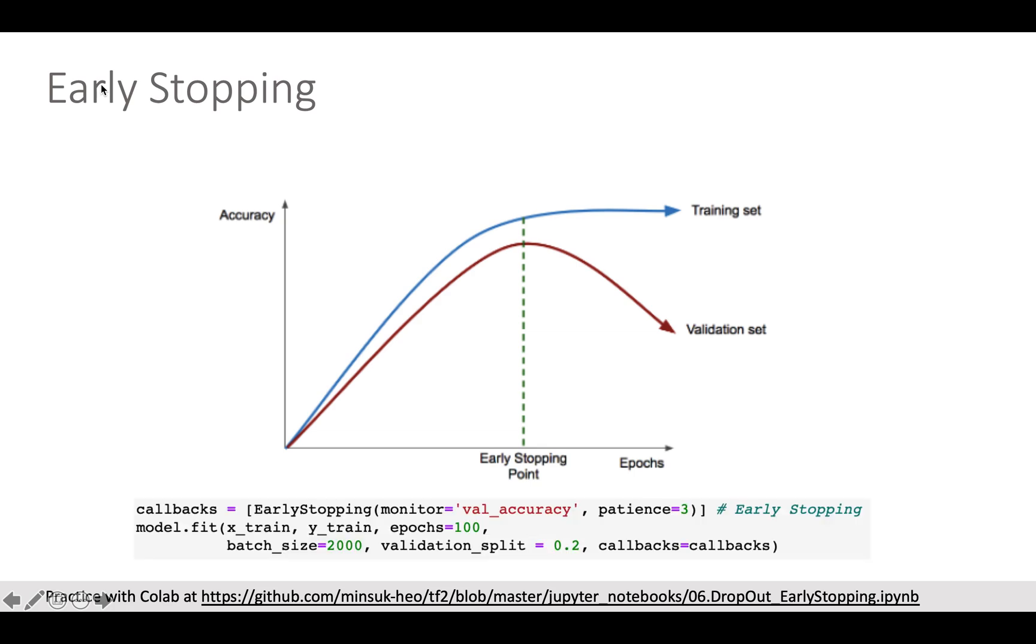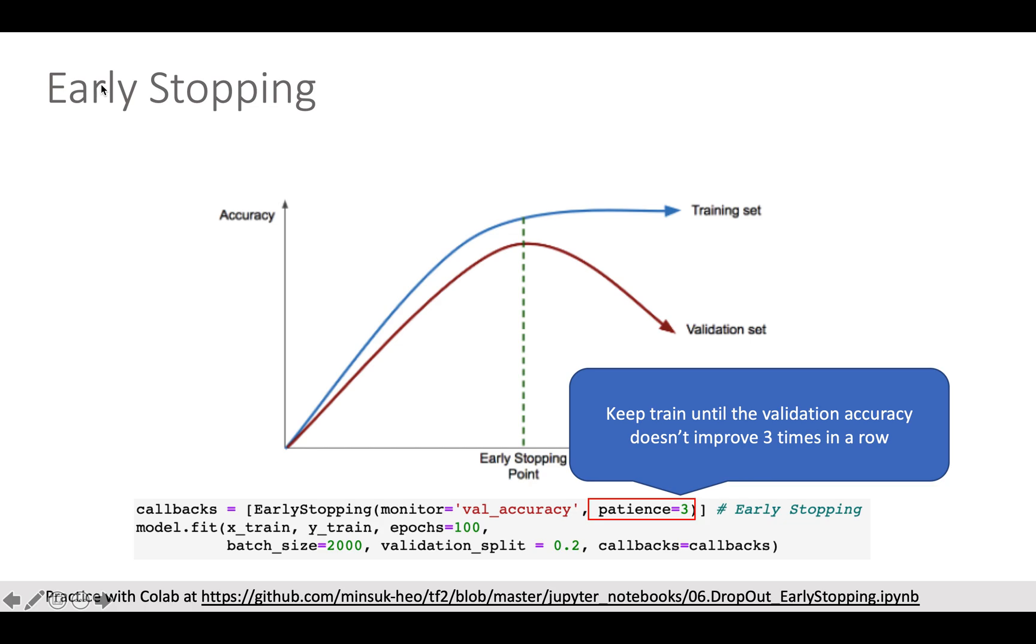Here is the TensorFlow 2 code to implement early stopping. Two key points from this code are: First is the patience parameter. Here I set it as 3, which means I want to early stop the training when the validation accuracy doesn't improve for 3 times in a row.